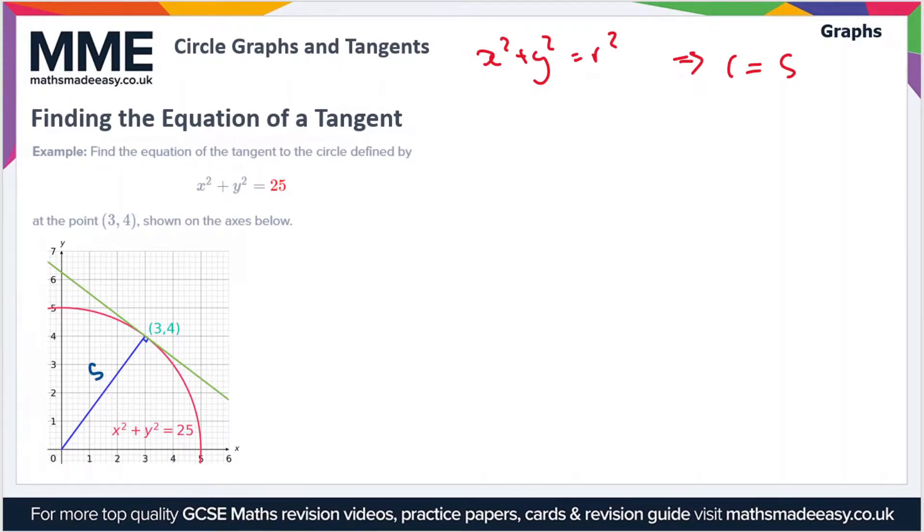Next, in order to find the equation of a tangent, the first thing we have to do is find the equation of the radius. We'll use the point three four to do this. The first thing we're going to look at finding is the gradient, so to find the gradient we need to find the change in y and divide it by the change in x.